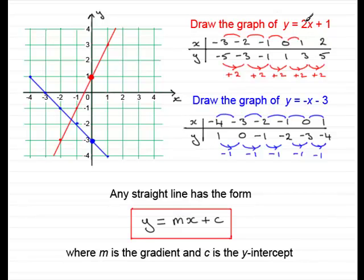Just to recap: for y equals 2x plus 1, the gradient m is 2 and the c value — where it crosses the y-axis — is plus 1. For the blue graph, m was minus 1 and c was minus 3, corresponding to that point on the y-axis. So this is the form of any straight line, and using this form is very useful in determining the gradient and the y-intercept. That brings us to the end of this tutorial on recognizing that y equals mx plus c is the equation of a straight line.